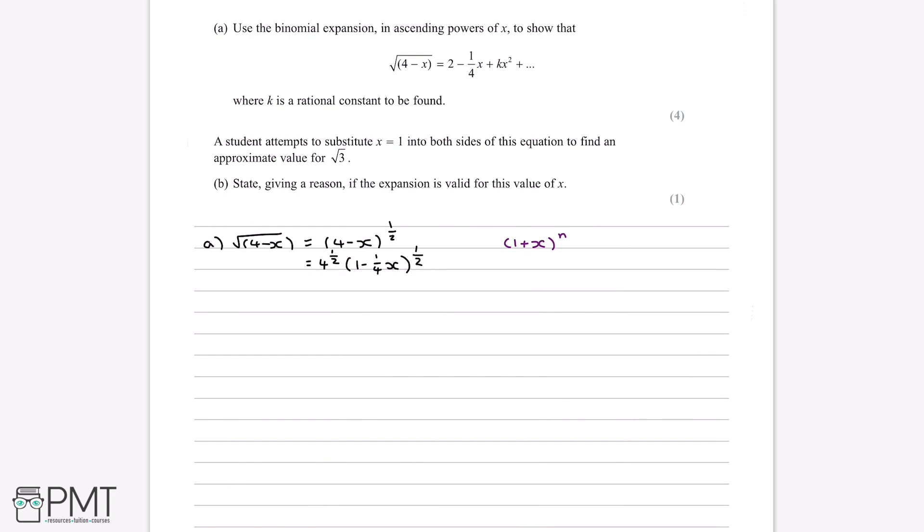And obviously 4 to the power of a half, square root of 4, is 2. We can assume it's the positive one for this kind of question. And we're left with 2 bracket 1 minus a quarter x to the power of a half.